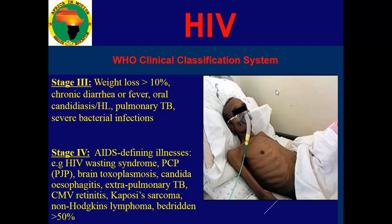Stage 4 is the one we call AIDS-defining illness. HIV-wasting syndrome: the patient will lose weight and become cachectic — very, very slender. PCP, Pneumocystis jirovecii pneumonia. Toxoplasmosis. Candida esophagitis. Extrapulmonary TB — TB that we know can affect the lungs, but when the immune system is low, when the soldiers have gone deep down and are almost depleted, TB can affect other parts of the body.